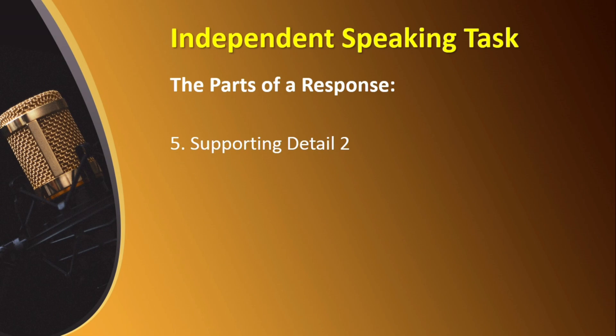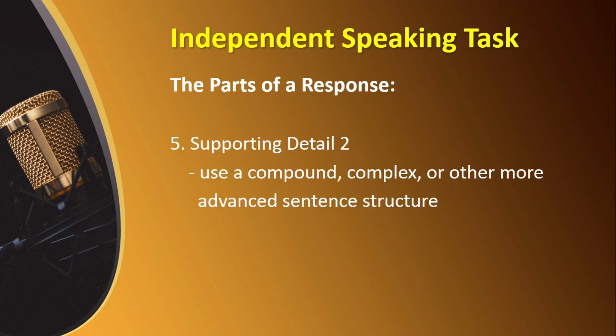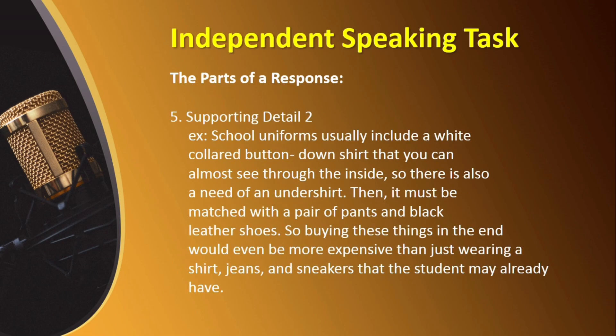If you are guessing that the next element of your response is an explanation or an example, then you got it. But do not forget your sentence variation. For example: 'School uniforms usually include a white collared button-down shirt that you can almost see through, so there is also a need for an undershirt. Then it must be matched with a pair of pants and black leather shoes. So buying these things in the end would even be more expensive than just wearing a shirt, jeans, and sneakers that the student may already have.'